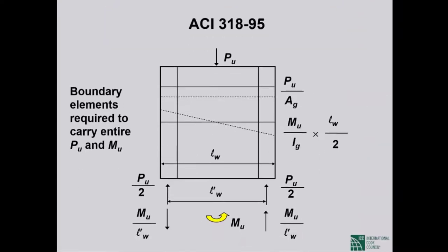Turning now to special shear wall design for flexure and axial compression. This is the only time we go back to ACI 318-95, the edition preceding 318-99 when the current shear wall design approach was first introduced.